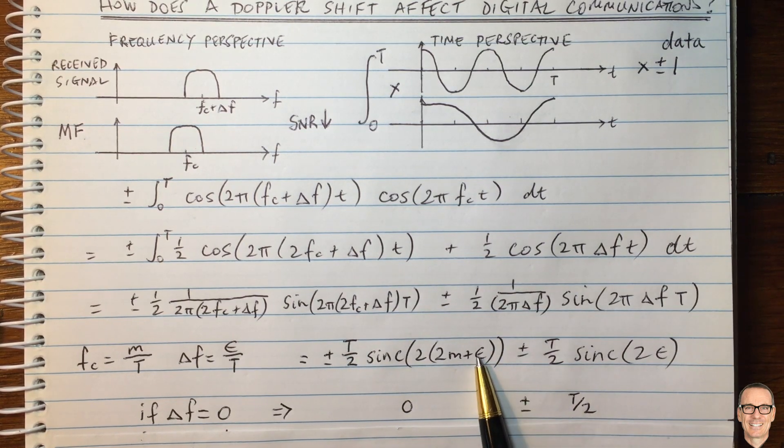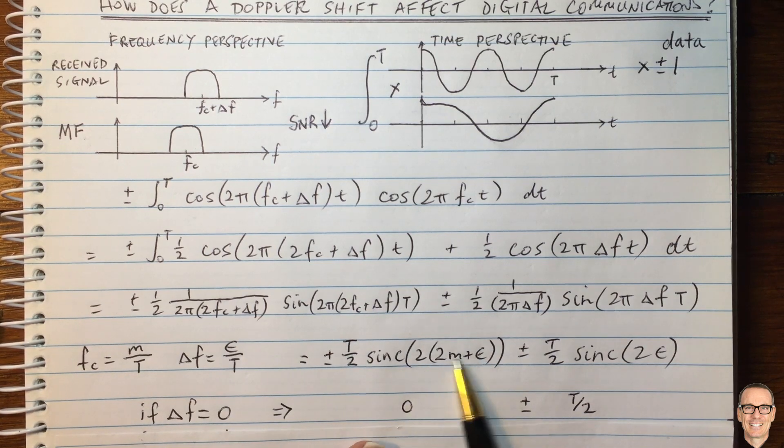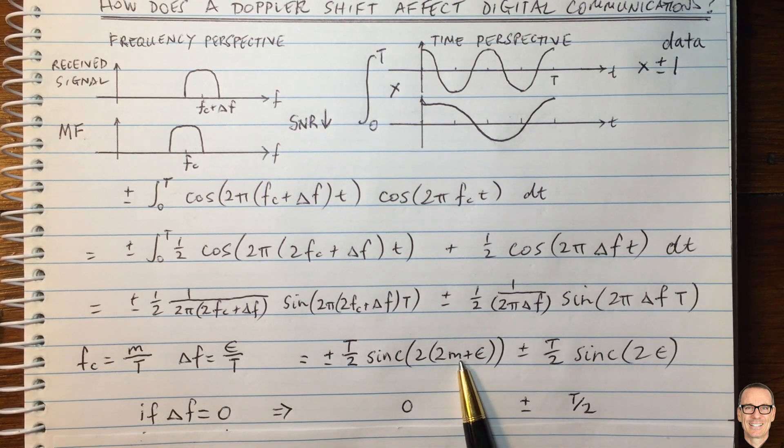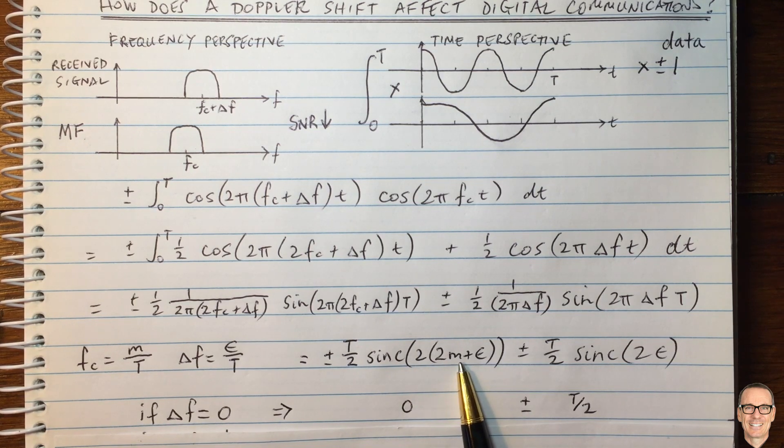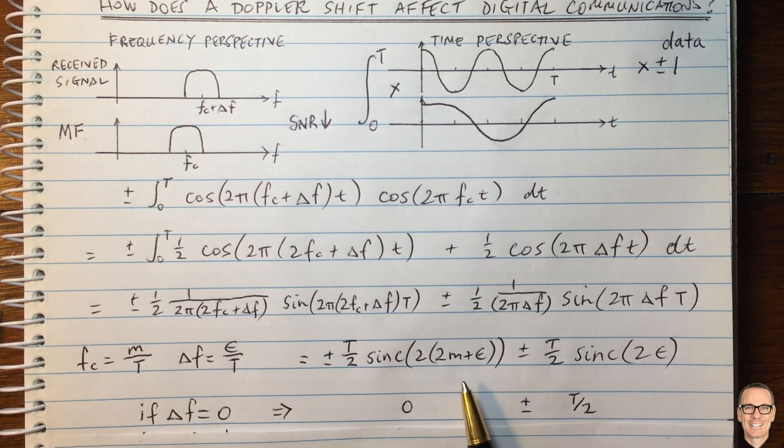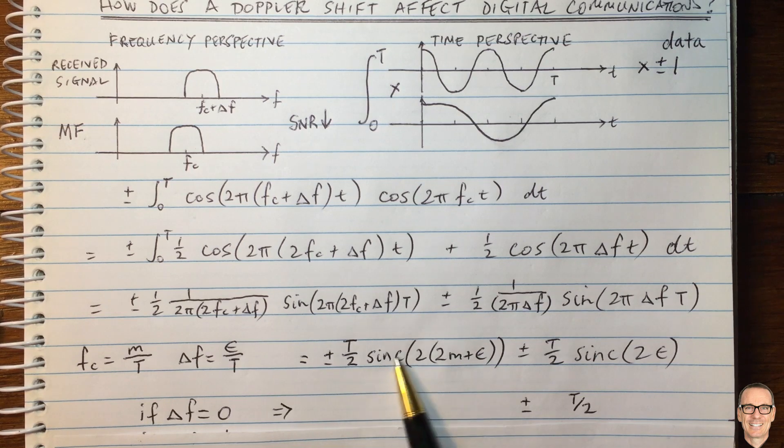What about this term here, when the epsilon does not equal zero? Well, this term here, epsilon is so much smaller than M that the sinc function, you're still going to be out in the tails of the sinc function. So this is going to be approximately equal to zero.